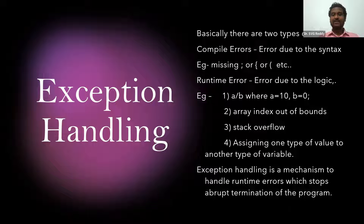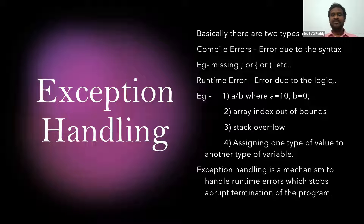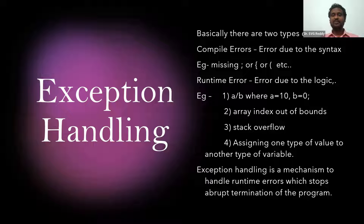At those types of scenarios, the system may terminate out of the program, or at times it may even crash the system. For example, consider applications like an ATM, a railway reservation system, or an airport reservation system — continuous systems that should be running 24/7. If any exception is not handled properly and the program terminates, end users will face a lot of problems, and it leads to very bad credibility.